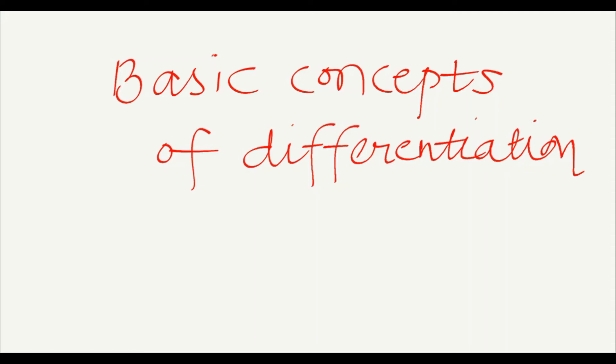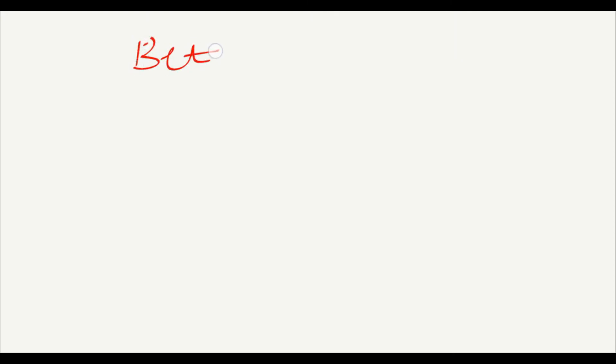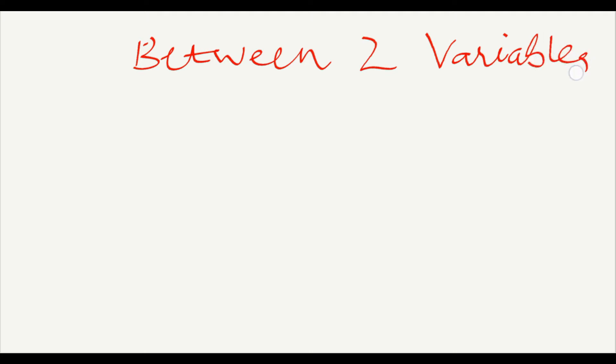Hello friends, today we discuss the basic concepts of differentiation. Always remember, differentiation is always between two variables. For example, if we have the function y equals x, here are two variables y and x, so the differentiation will be written as dy upon dx — that is, differentiation of y with respect to x.